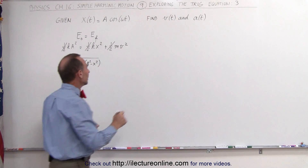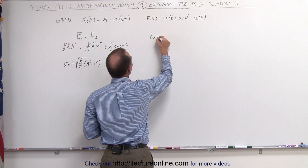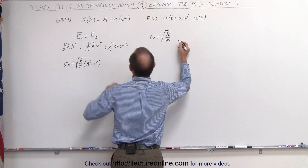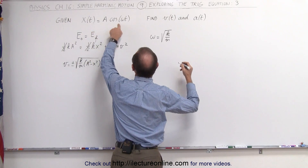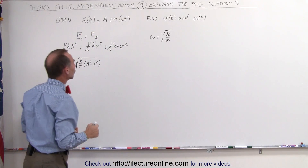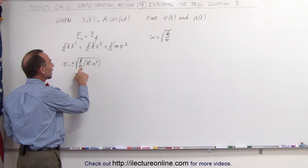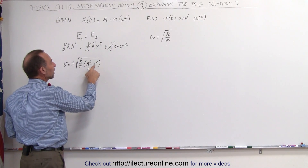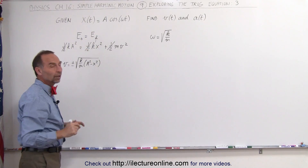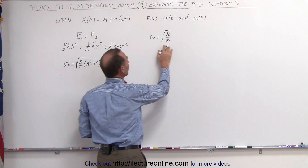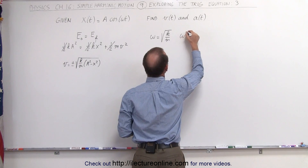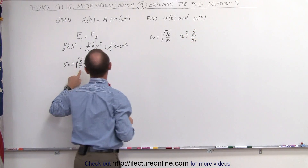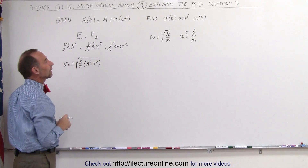We remember that omega is equal to the square root of k divided by m, and we can say that x is equal to A times the cosine of omega t. So let's replace k divided by m with omega, and in A squared minus x squared, let's replace x by what x equals. Remember that if omega equals this, then omega squared equals k divided by m. And since we have k divided by m here, we can write omega squared.